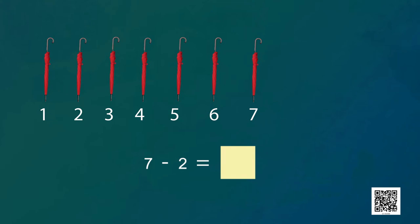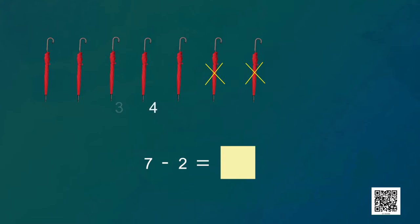Let's take away two umbrellas from these seven. Subtraction is really exciting! So seven minus two — let me count the remaining umbrellas: one, two, three, four, five. Yes, seven minus two is five. Now I have only five umbrellas. Seven minus two is equal to five. Subtraction is very easy — we just need to take some numbers away from all.